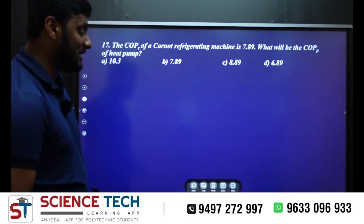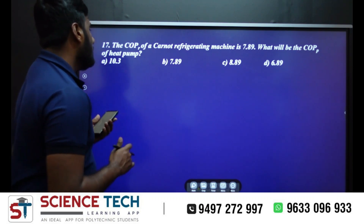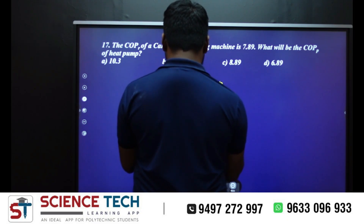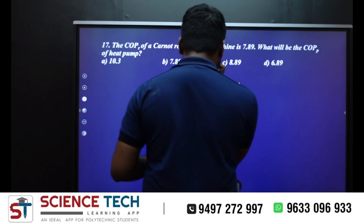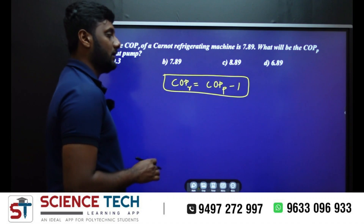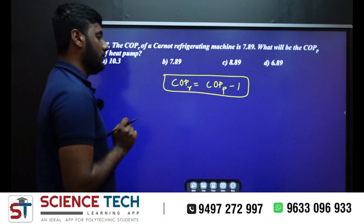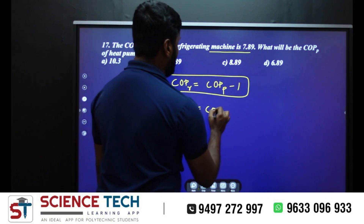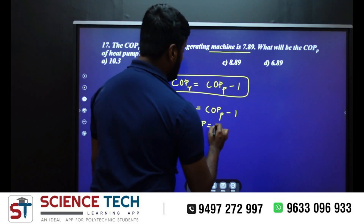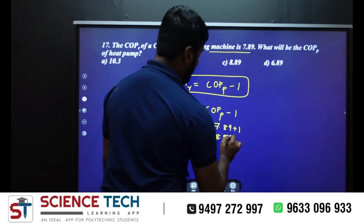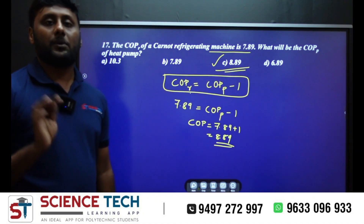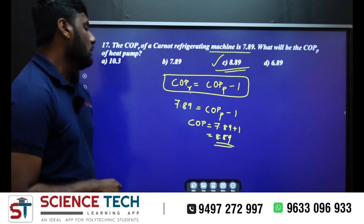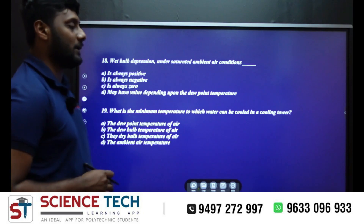COP of the Carnot refrigerating machine is 7.89. The relation is: COP of refrigerator equals COP of heat pump minus 1. So COP of heat pump equals 7.89 plus 1, which is 8.89. Remember this equation: COP of refrigerator equals COP of heat pump minus 1.